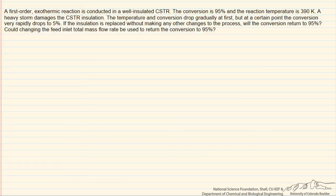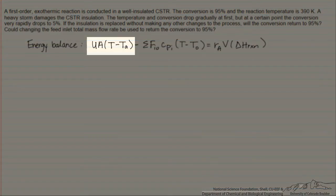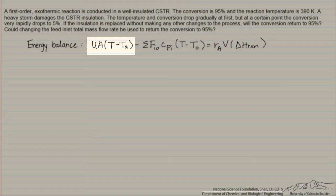We'll look at this in terms of the energy balance for the reactor. Here is our energy balance, where we have our heat transfer term, so we have an overall heat transfer coefficient U times an area A through which we're exchanging heat times this temperature difference between the temperature in the reactor and the temperature outside the reactor that we'll call T sub a.